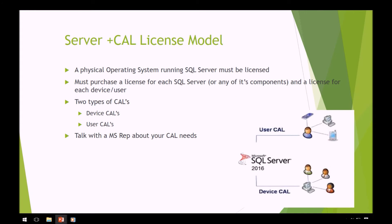In a server-plus-CAL licensing model, the operating system running SQL Server must be licensed, and you must purchase a license for each SQL Server instance as well as a license for each device and user. There are two types of CALs: device CALs and user CALs. User CALs license an actual human being to access SQL Server, and device CALs license an actual device — such as a kiosk — that uses SQL Server.